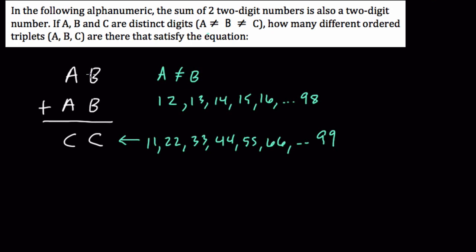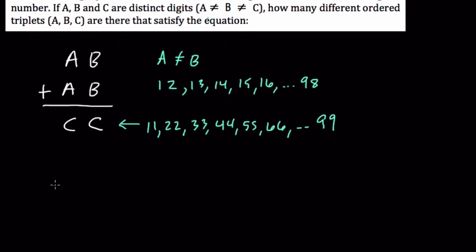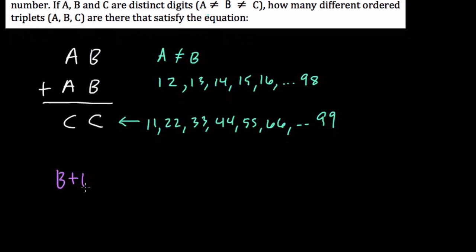if I add B plus B and get C, let's say B plus B equals C. How could it be that A plus A also equals C if A does not equal B?